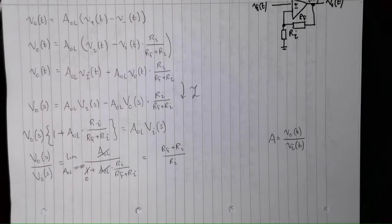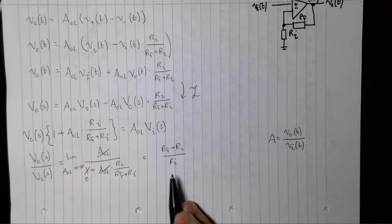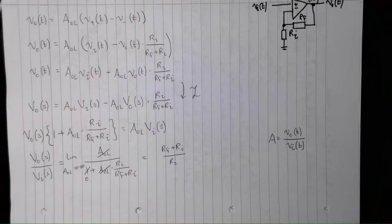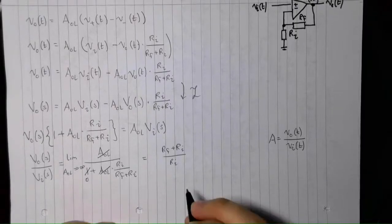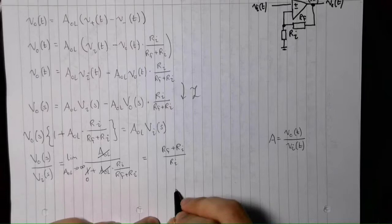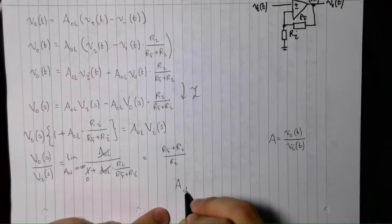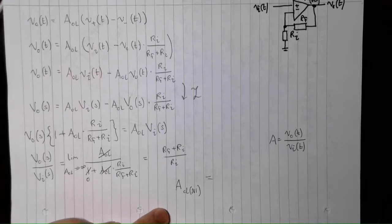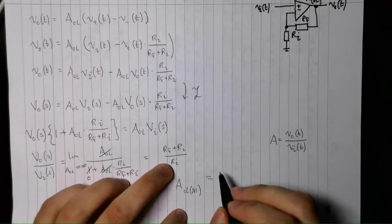And voila, we have our voltage gain. Now, notice how it doesn't quite appear in the same form as we are used to. That can be solved quite easily by splitting up this fraction. So, let's go ahead and write the final equation now.